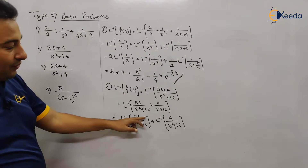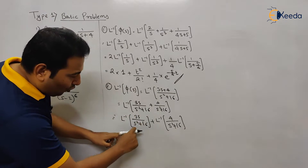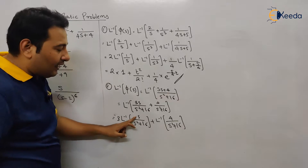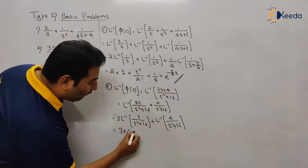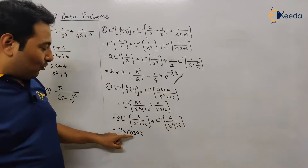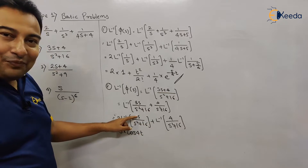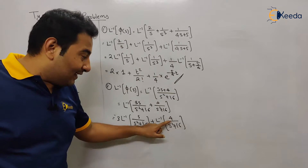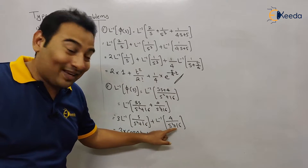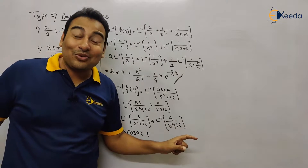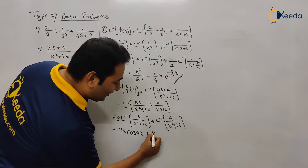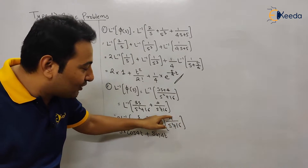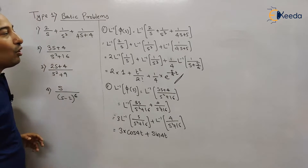Tell me what is the Laplace inverse of each term. The 3 is a constant that will come out. Then s/(s²+16) is cos 4t — since the Laplace of cos 4t is that term, its inverse is cos 4t. For the second term, a/(s²+a²) gives sin(at). So Laplace inverse of 4/(s²+16) is sin 4t. Done with problem number two.